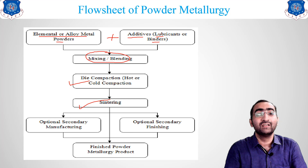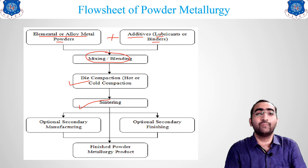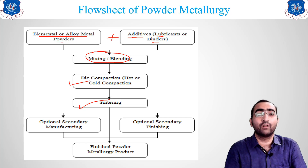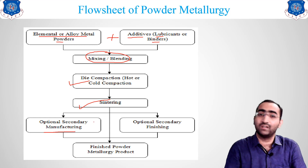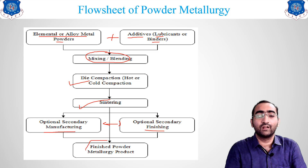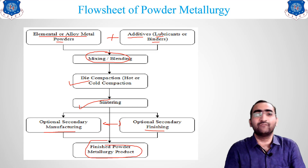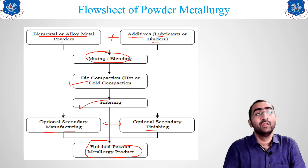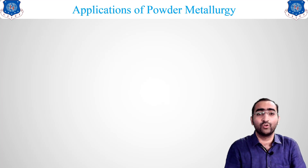After die compaction, sintering is done. Sintering means providing heat treatment to the material — heating it so that properties like strength increase. After that, there is an optional secondary manufacturing or finishing step. These last steps are optional; if you want, you can skip them and still get your final product. This is the basic flow sheet followed for any powder metallurgical product.